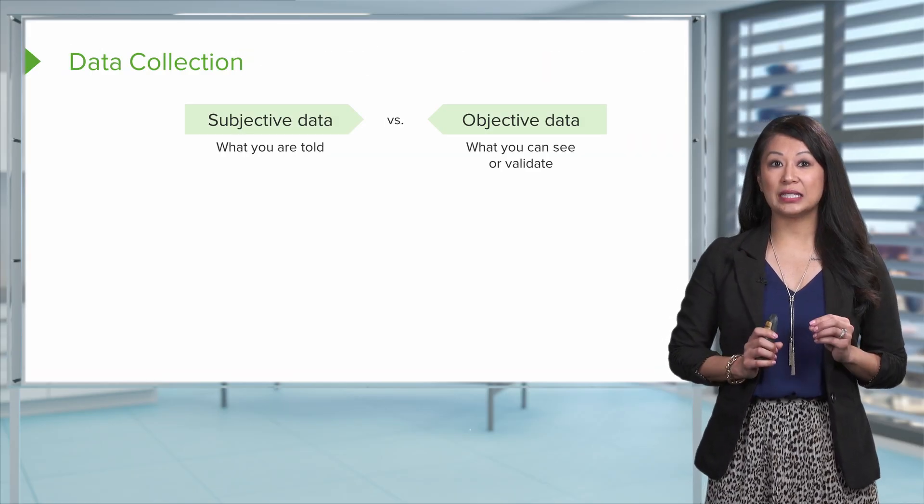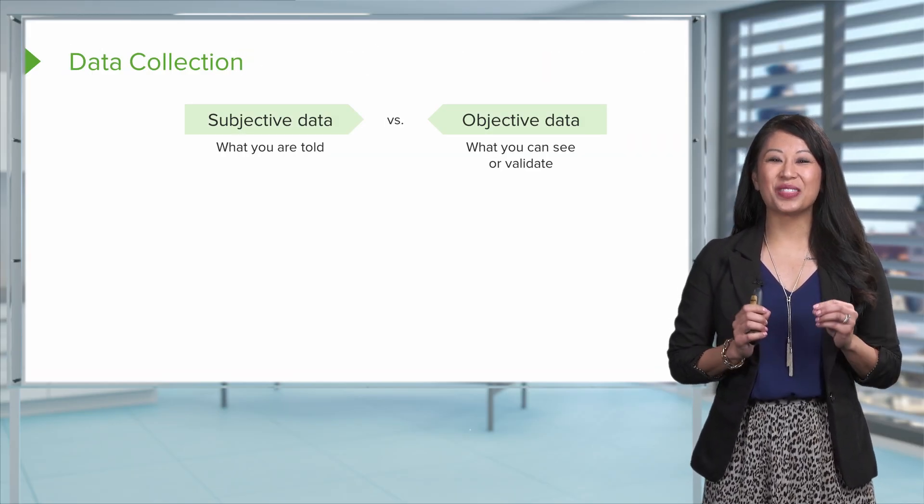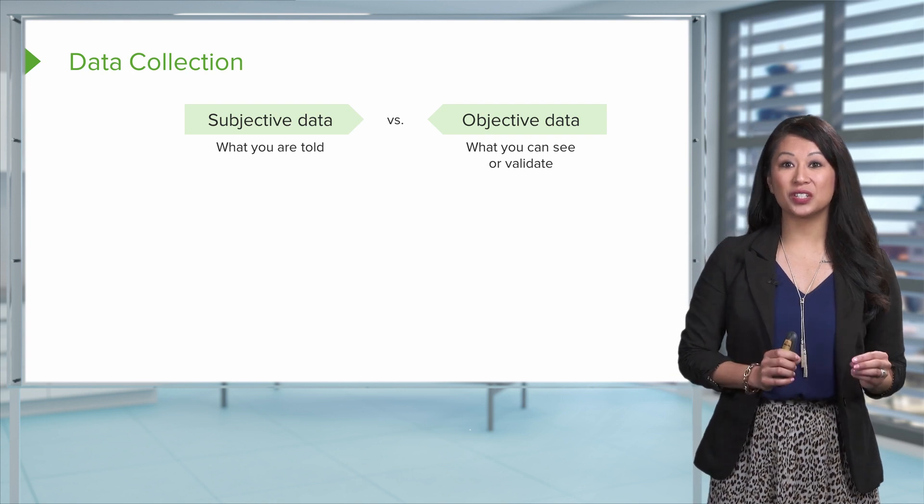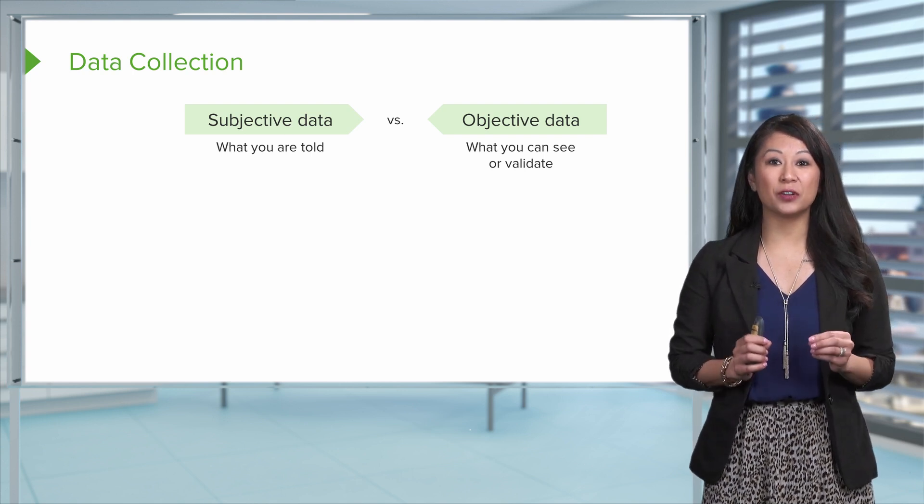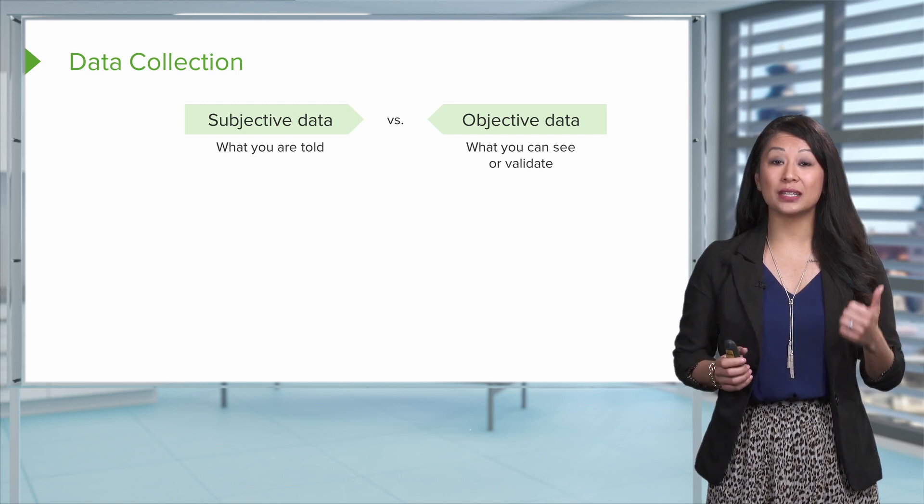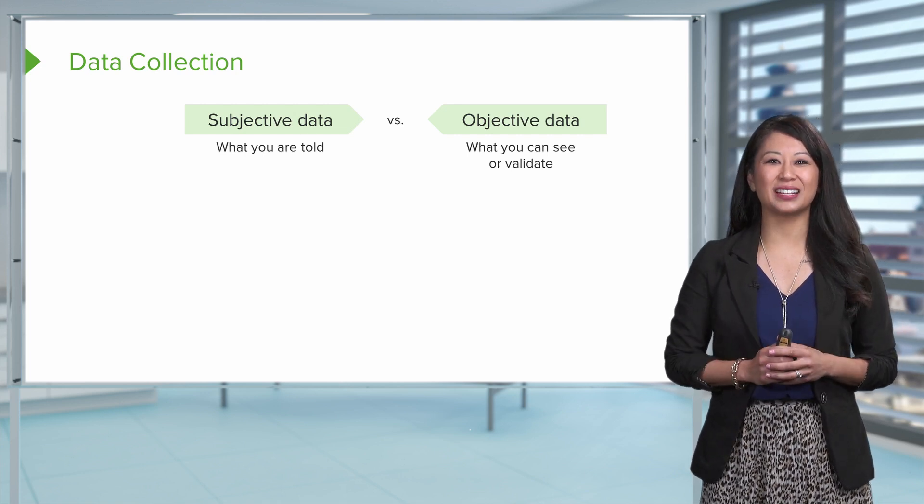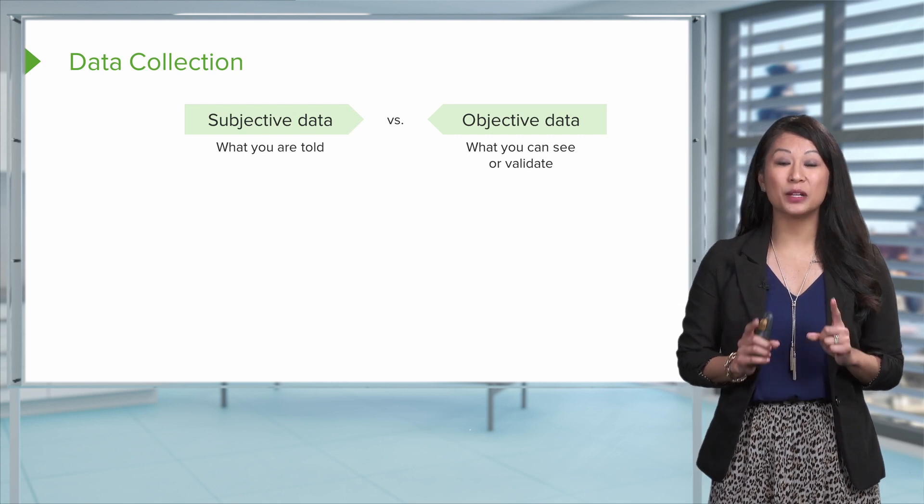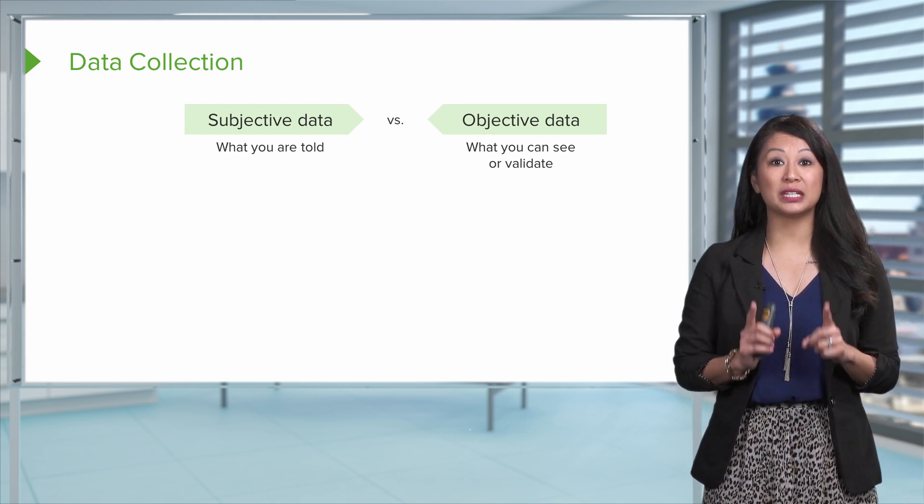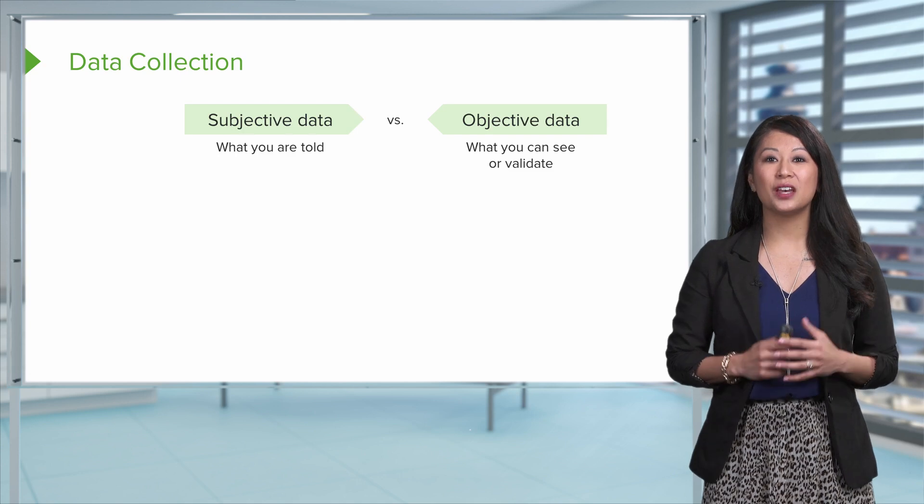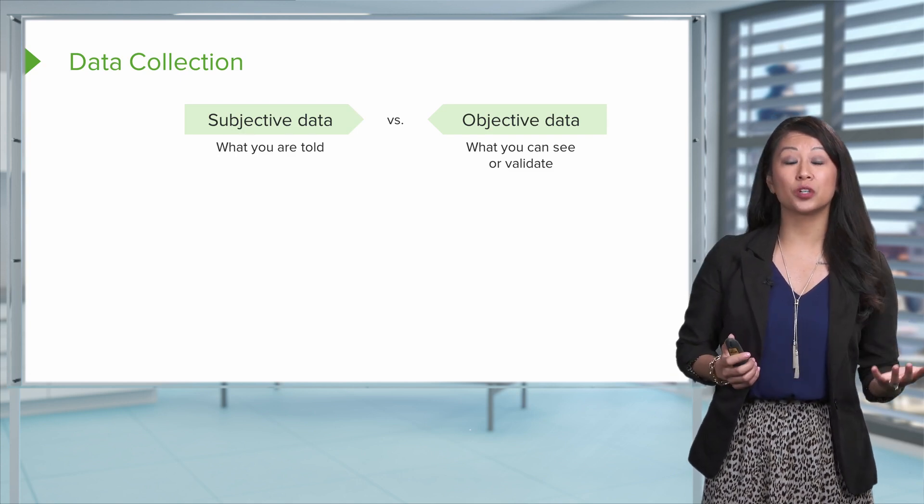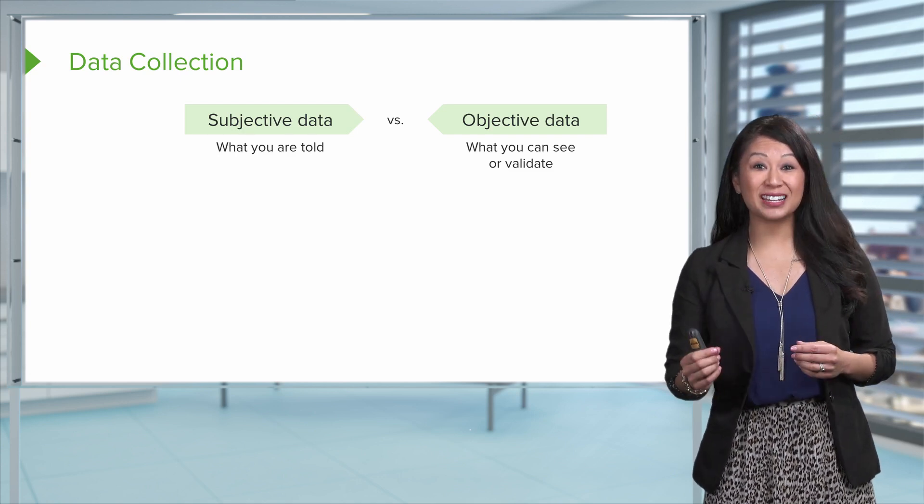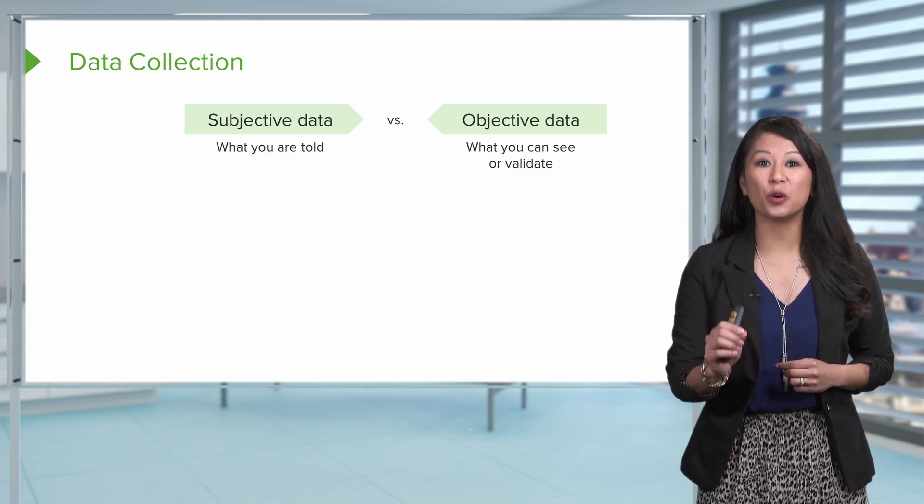Now, let's talk about data. So this is really important as a nursing student because there's a difference between the type of data that we use. We call it subjective and objective data. So when you're talking about subjective data, this is an important point as a nursing student to distinguish between the two. So subjective would be what you're told versus the objective, meaning what you can actually see or validate.